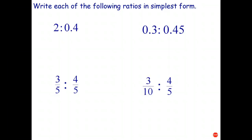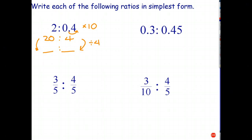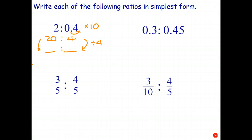Welcome back. The first one has one digit after the decimal point, so I multiply both numbers by 10: 2 times 10 is 20, and 0.4 times 10 is 4. The ratio is 20 is to 4. Four is the highest common factor, so I divide both numbers by 4: 20 divided by 4 is 5, and 4 divided by 4 is 1. The simplified ratio is 5 is to 1.